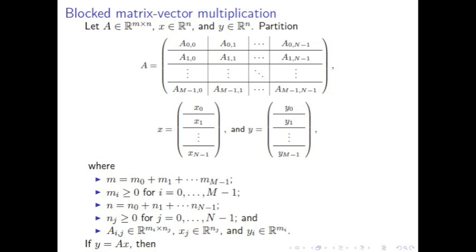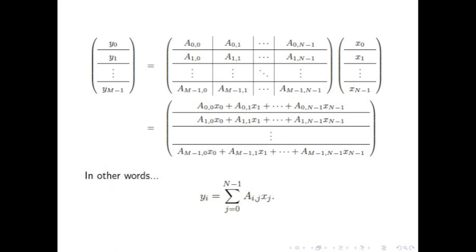Here we state the general principle: if you partition a matrix A and vectors x and y conformally, then the partitioned matrix-vector multiplication simply takes dot products of the rows of the partitioned matrix with the partitioned vector x to yield subvectors of vector y.